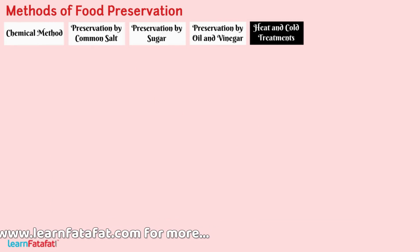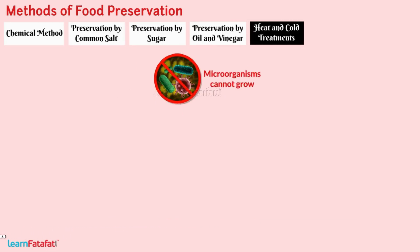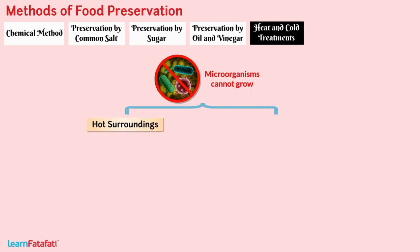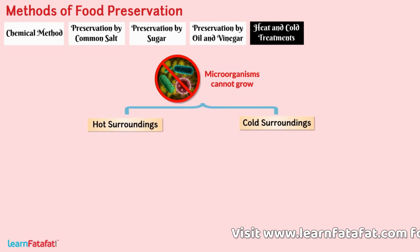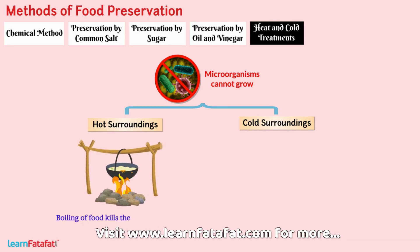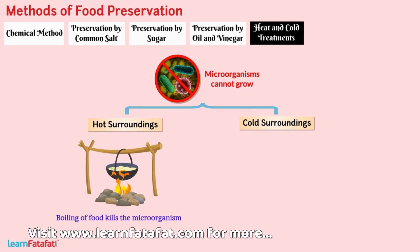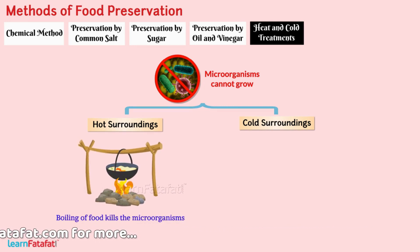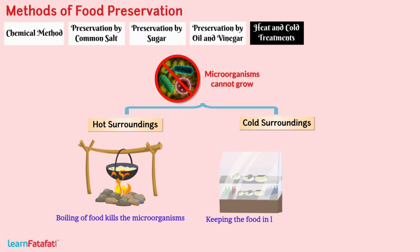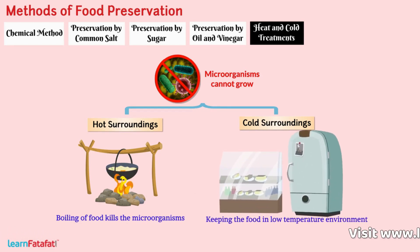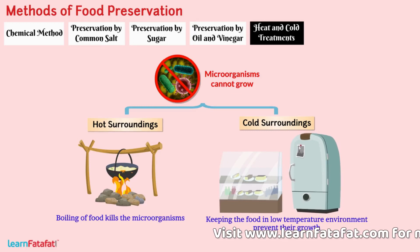Heat and cold treatments. Microorganisms cannot grow in hot and cold surroundings. Therefore, boiling of food kills the microorganisms, and keeping the food in a low temperature environment, such as a refrigerator, prevents their growth.